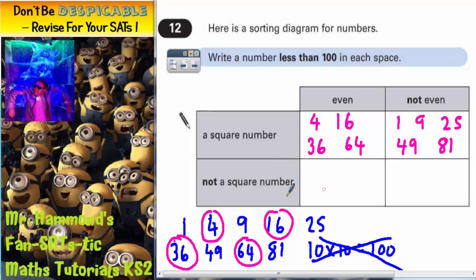Now we want something that's not square, so that's not in this list, but is even. Now there are lots of things we could choose from here. So let's just start with even numbers that are not in that list, so they're not square. So we could have 2. We can't have 4 because it's square. We could have 6.